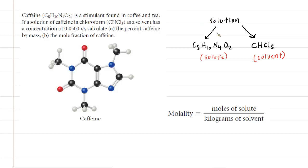In this question, we have a solution composed of two components. We have our caffeine, which is the solute, and then the chloroform, which is stated to be the solvent.